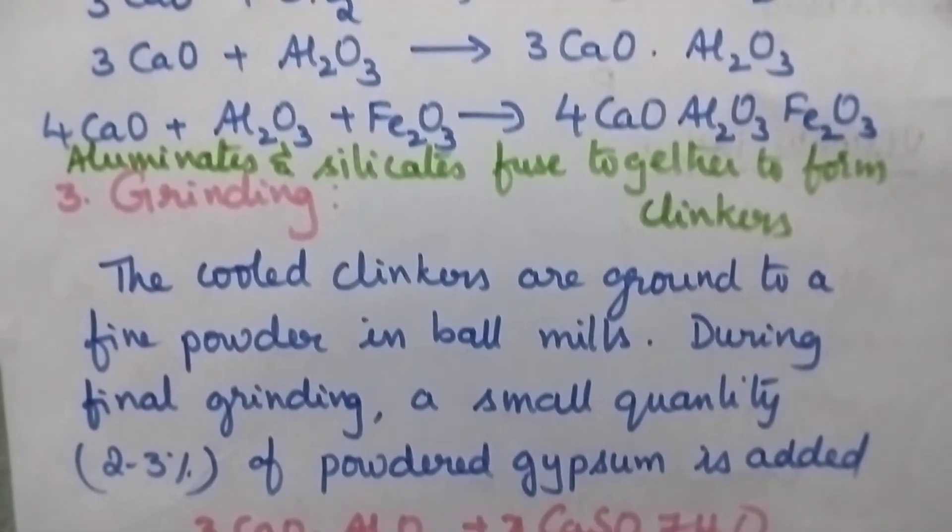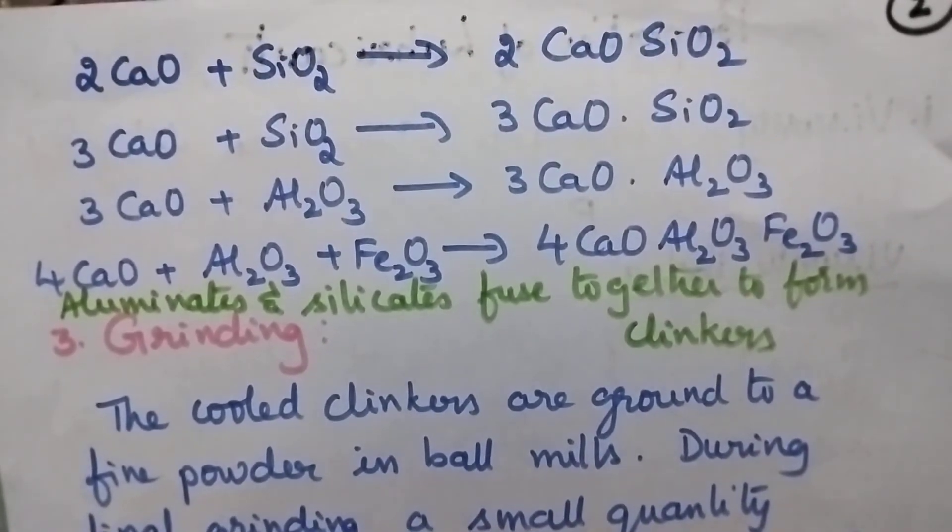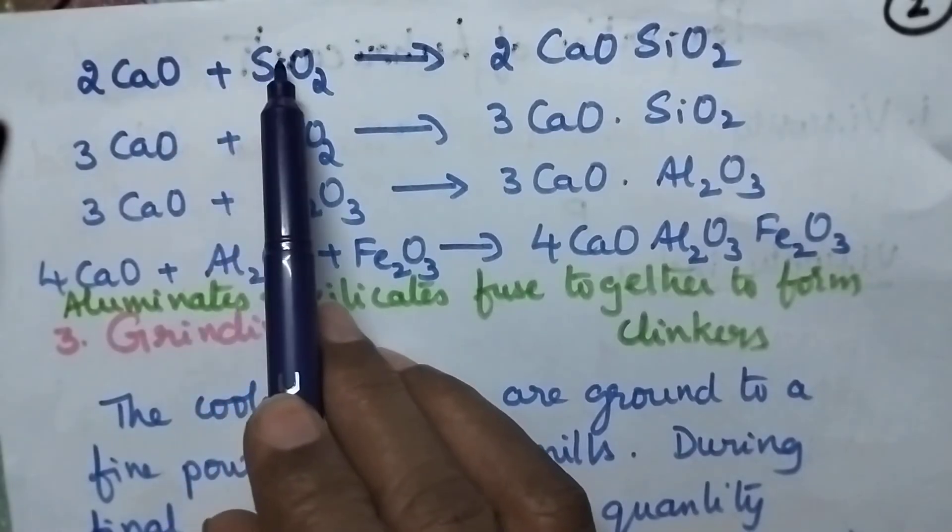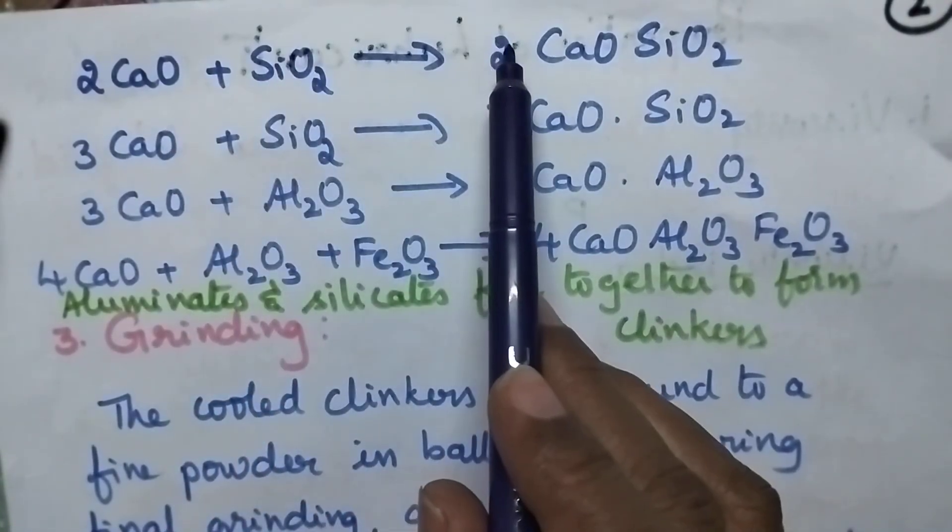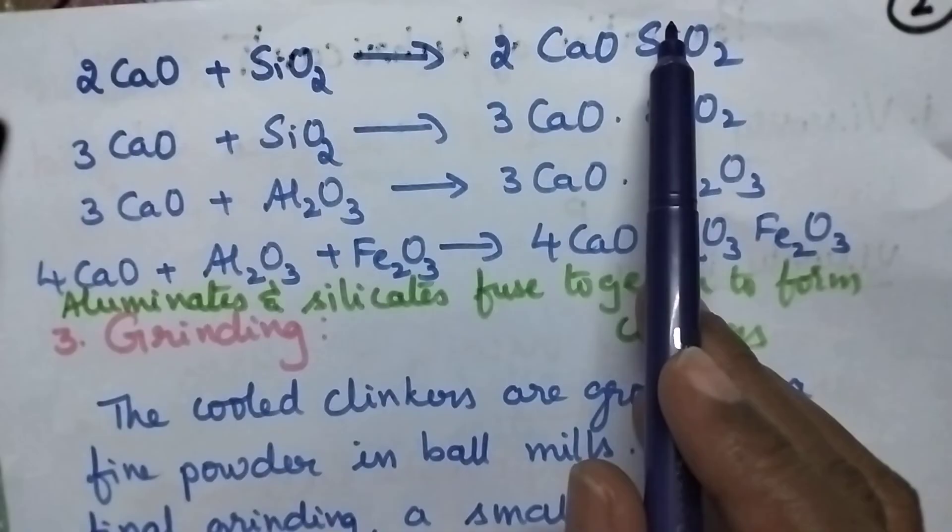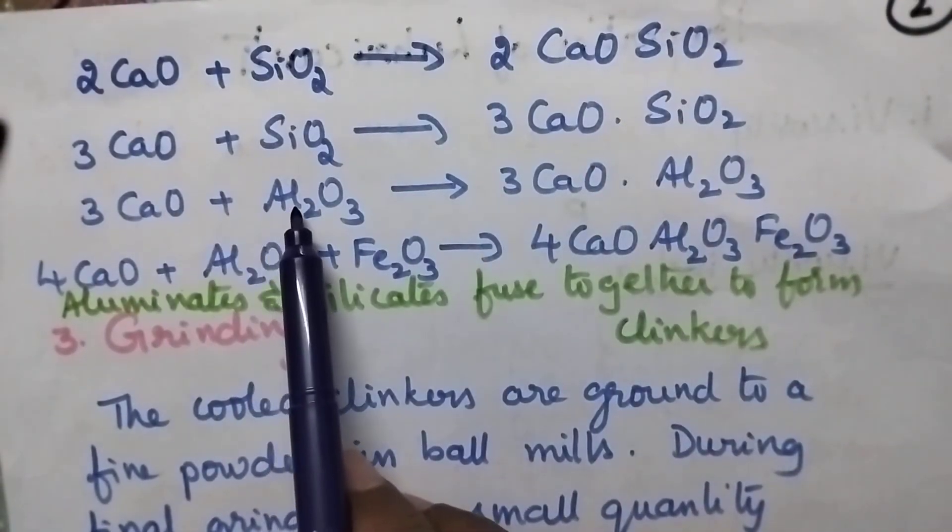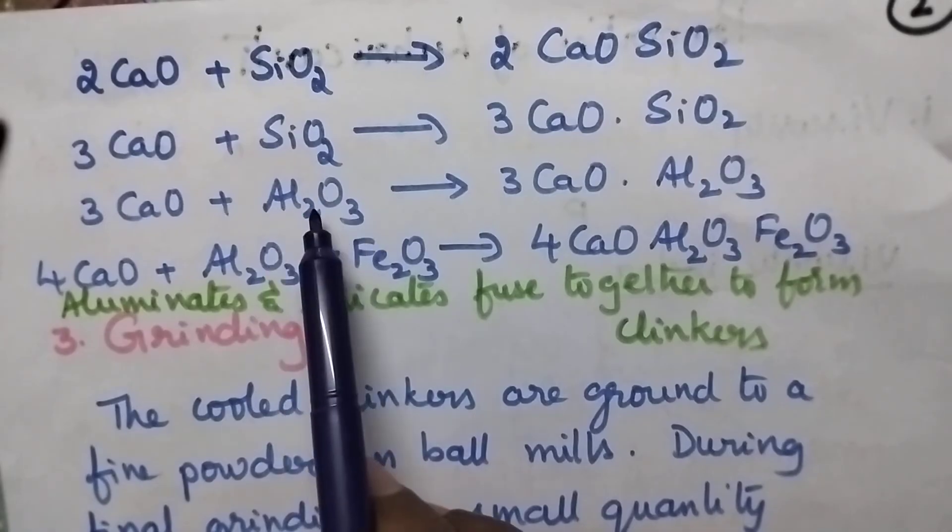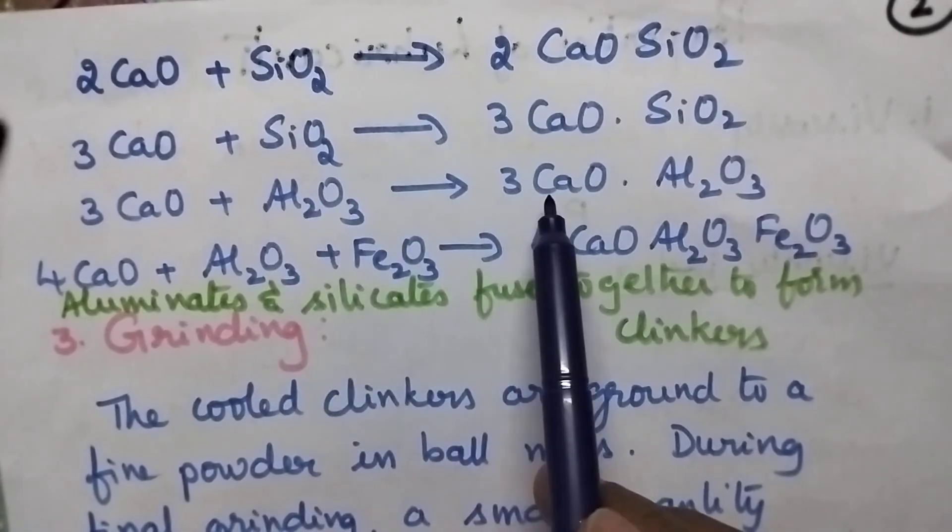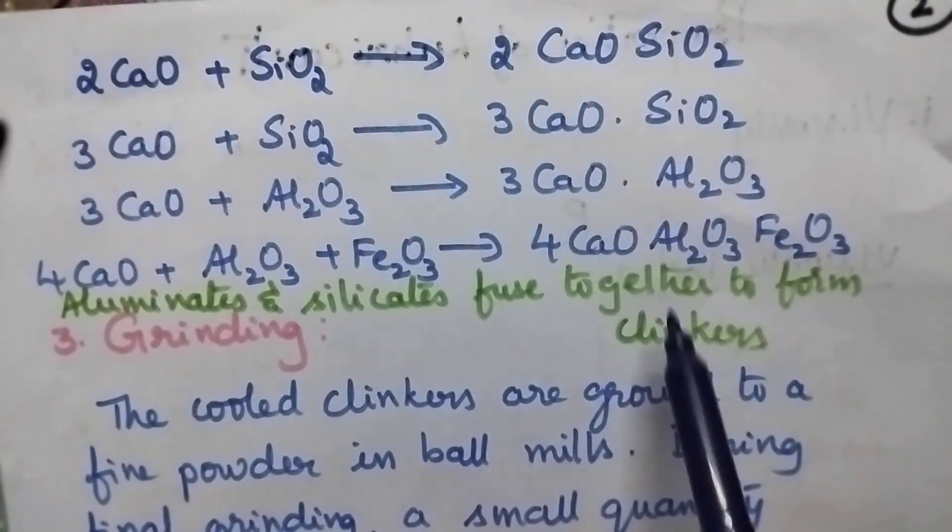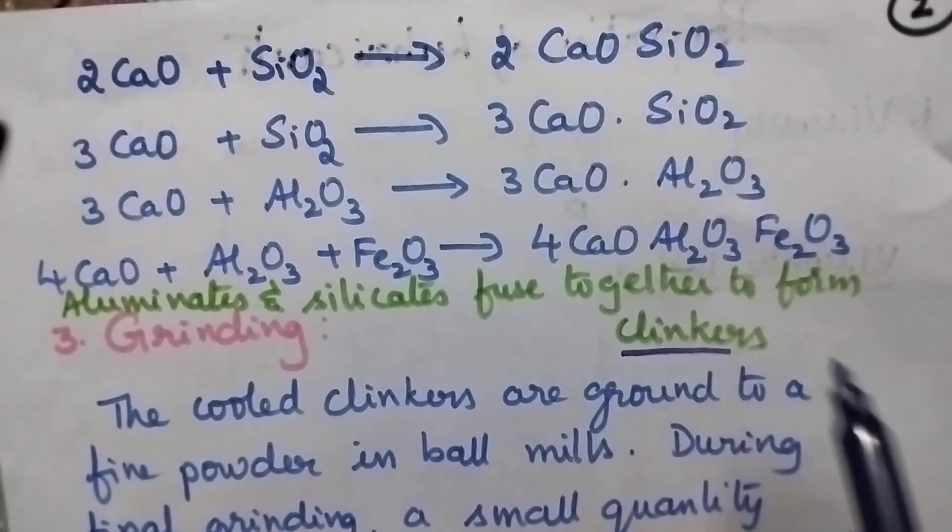In the lower part of the kiln, the lime and silica undergo interaction, resulting in the formation of calcium silicate. Calcium and alumina undergo interaction, resulting in the formation of calcium aluminate. In that way, it results in the formation of clinkers.